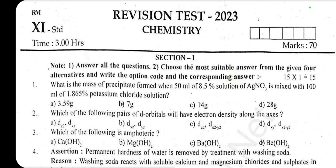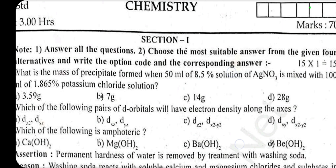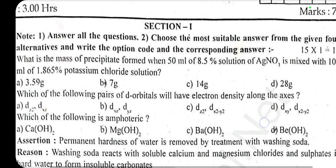Which of the following pairs of d-block d-orbitals will have electron density along the axis? The answer is C: dx²-y² and dz² orbitals have electron density along the axis.